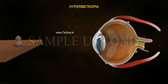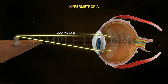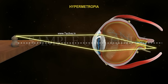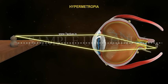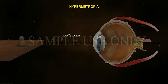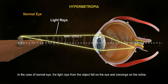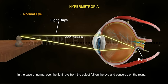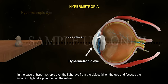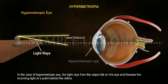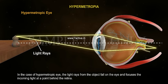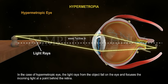Hypermetropia: If the eye lens focuses the incoming light at a point behind the retina, this defect is called Farsightedness or Hypermetropia. In the case of a normal eye, the light rays from the object fall on the eye and converge on the retina. In the case of a hypermetropic eye, the light rays fall on the eye and focus at a point behind the retina.